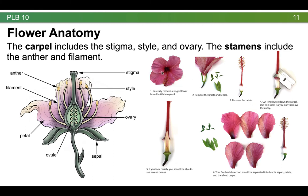The stigma, which I oftentimes refer to as the sticky stigma, is the point at which pollen lands. The style tends to be a long neck that extends to the ovary, and inside the ovary are the ovules, each of which, when fertilized, will develop into a seed. The stamens or male part of the flower include two parts, the filament and the anther, both of which are collectively referred to as the stamen.